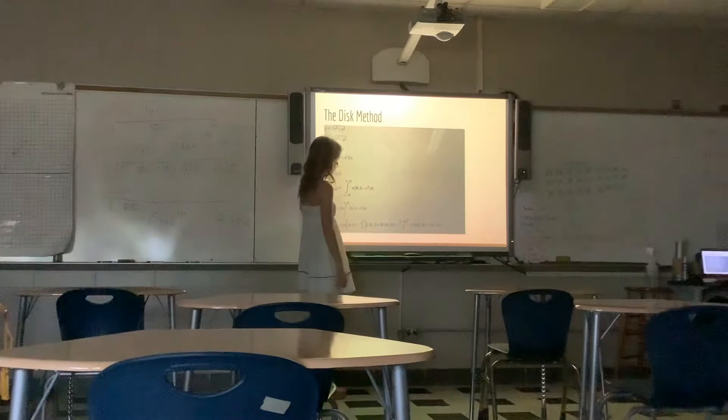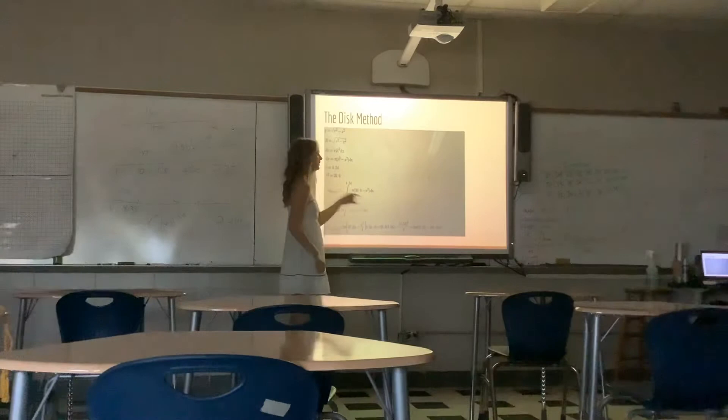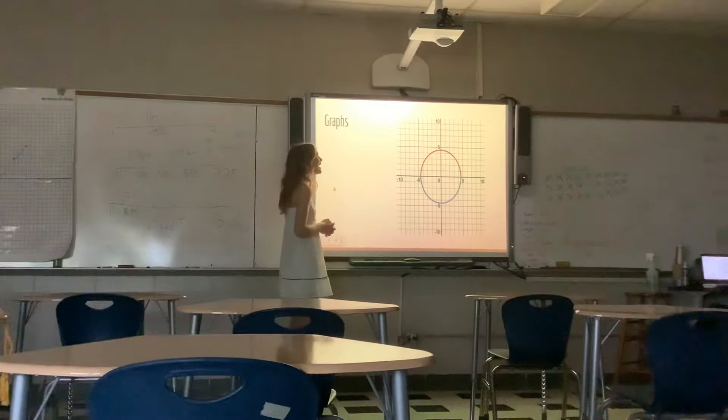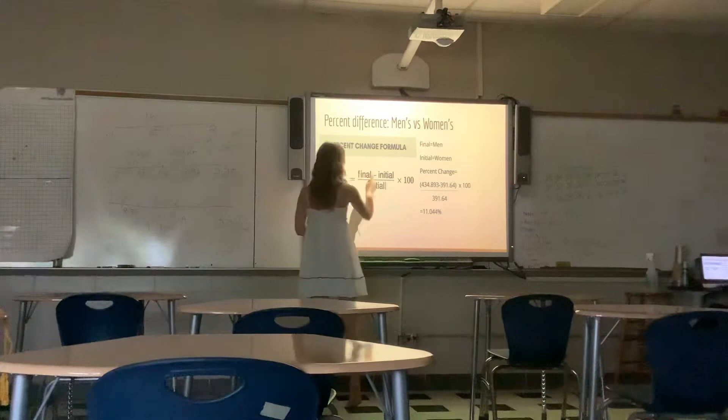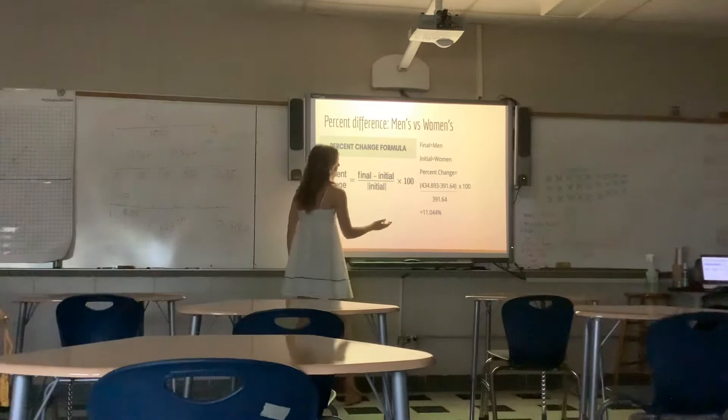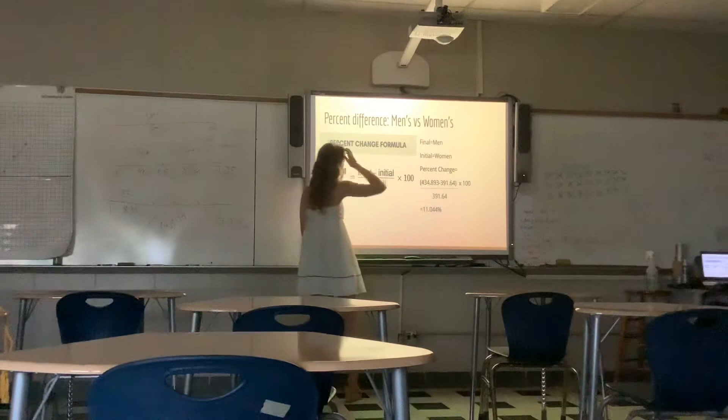I rounded here, so there's going to be a little bit of relative error. This is my graph with the circle. And then this is the percent change: final minus initial, divided by initial, times 100 — all absolute value. My relative error is about 11%.